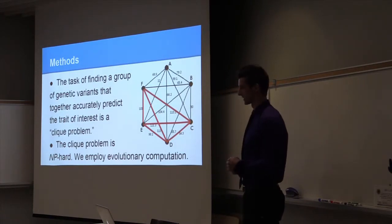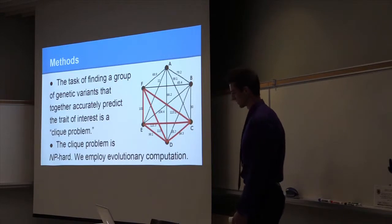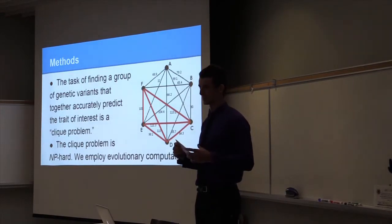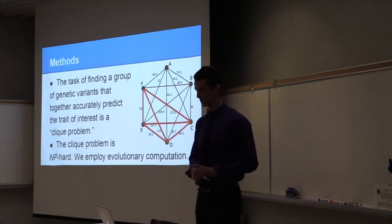So if it's NP-hard, we're going to employ evolutionary computation to find the best clique, which represents a group of genetic variants that together will predict the trait of interest.